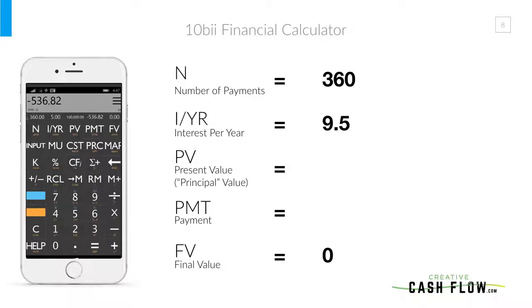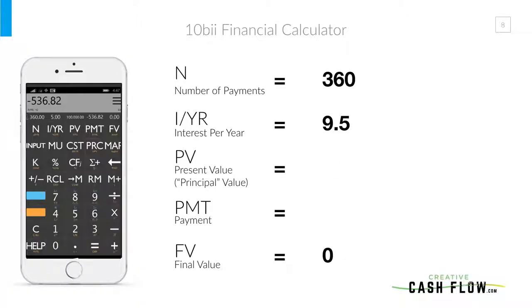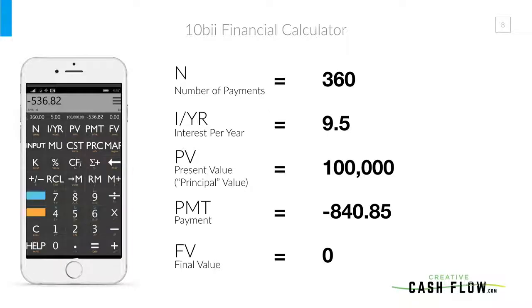Next, go to Interest Per Year — type 9.5 and push the I/YR button. You're entering the numbers first and then pushing the field you want it to populate. For PV, we said it's a $100,000 loan, so type 100,000 and hit PV. Now we have four of the five items filled in. We want that fifth one, so we just push PMT and it solves for us — which gives us $840.85. That's how you run these calculations.